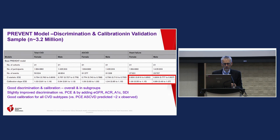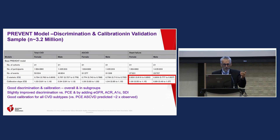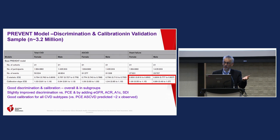There's slightly improved discrimination versus the pooled cohort equation — about 0.01, nothing to write home about. But we add more with eGFR, a little more with ACR, a little more with A1C, and a little more with SDI. The calibration is dramatically better, and heart failure is now included. I think we've moved forward quite a bit.